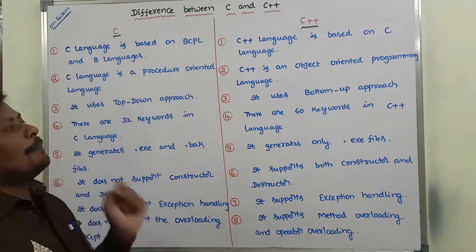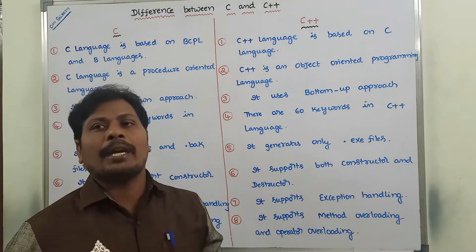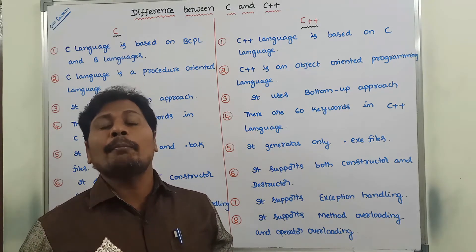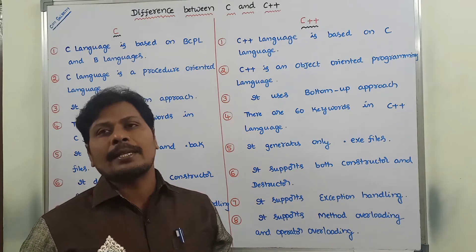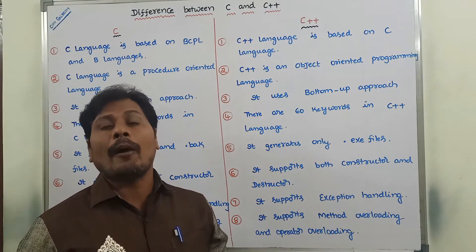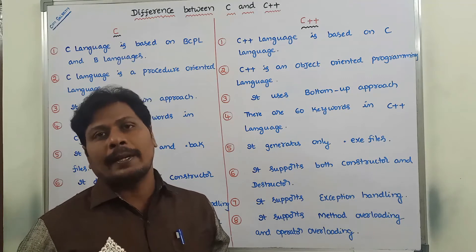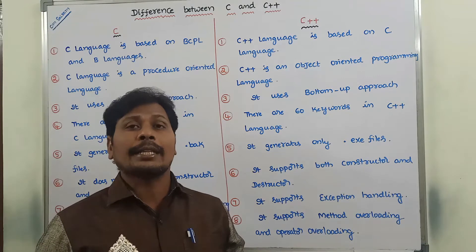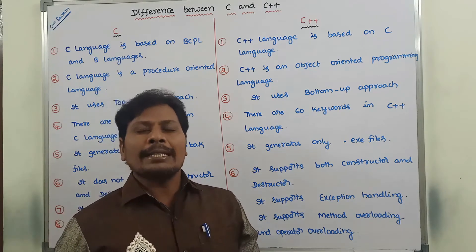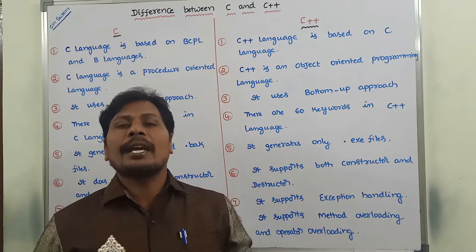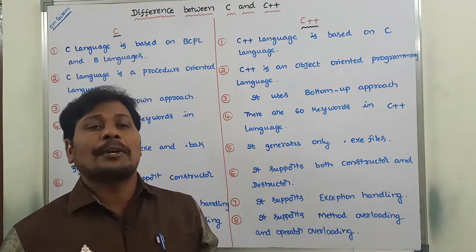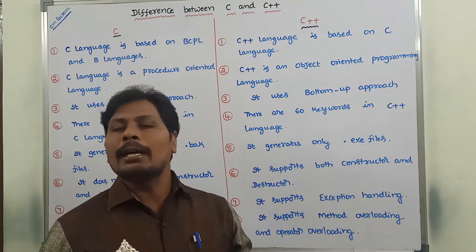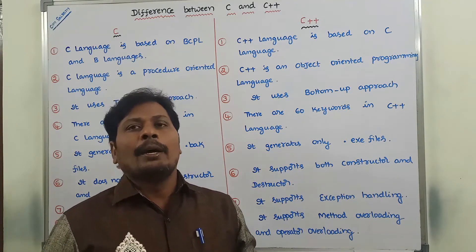The second point: C language is a procedure-oriented language. Every C program can be written using functions. A function can also be called a procedure — a procedure does not return a value, but a function can return a value. So we can say that C language is a procedure-oriented language, whereas C++ is an object-oriented language.